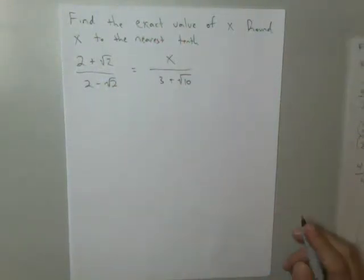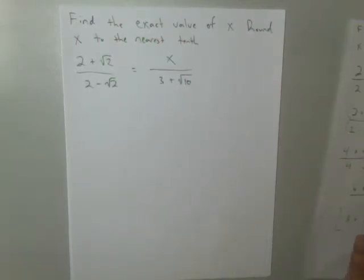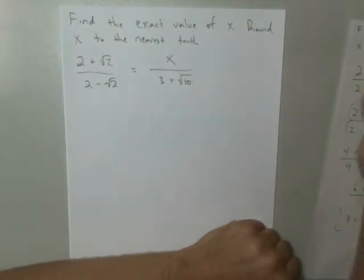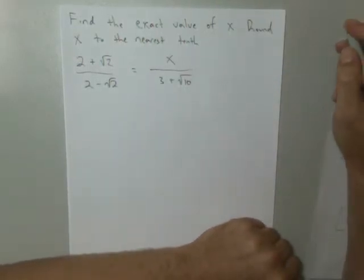Hello, YouTube. This is a problem involving operations with radicals, and it did not come out right the first time, so I thought I would go ahead and put it online and have a correct answer without taking up too much time. So let's go ahead and get started. We're asked to find the exact value of x in simple radical form, and then round x to the nearest tenth.